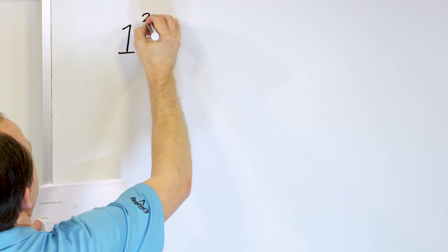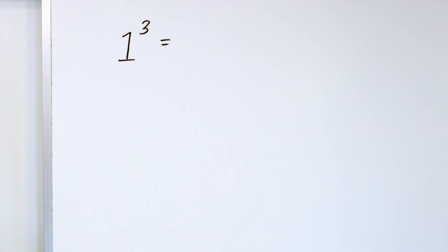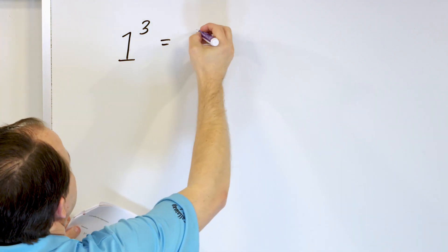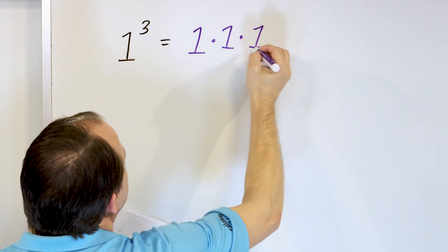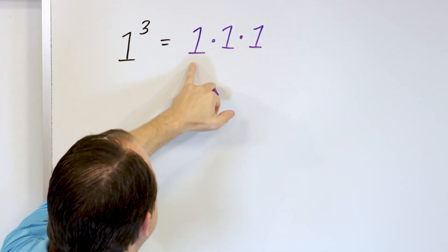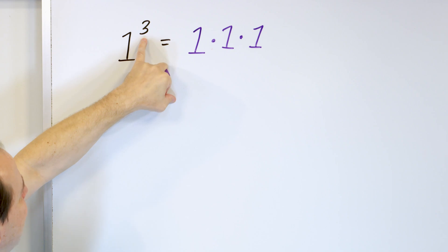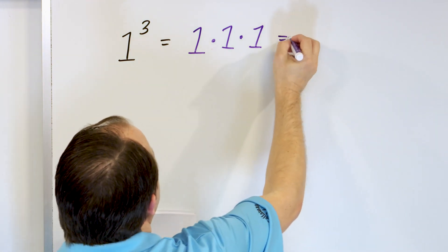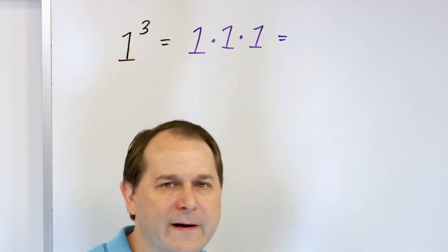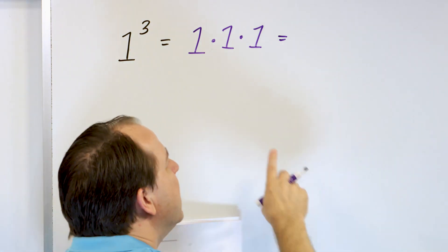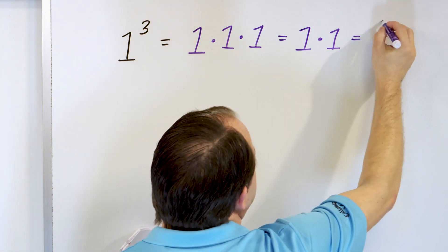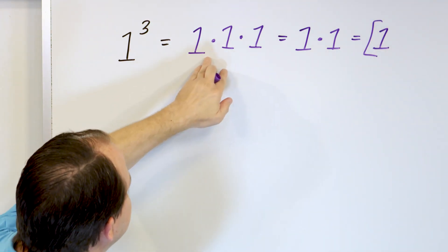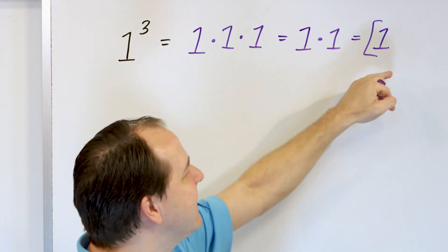Now let's change the exponent and mix it up. Let's say we have 1 to the power of 3. The exponent is telling you how many times you multiply by itself. So 1 times 1 would be 1 to the power of 2, but we have 1 to the power of 3, so it has to be times itself again. The number of times I have multiplied by itself is the same as the exponent — that's what the exponent is. Remember, order of operations means you go left to right. 1 times 1 is 1, and we still have to multiply by this 1, so 1 times 1 again is 1.